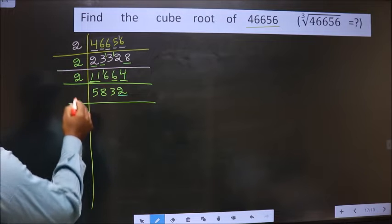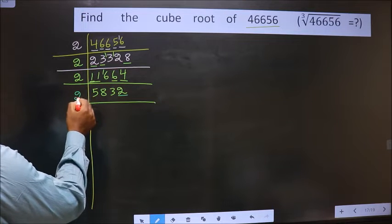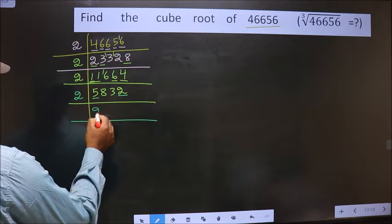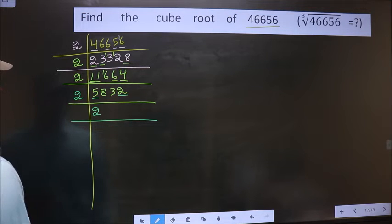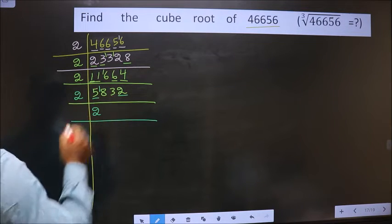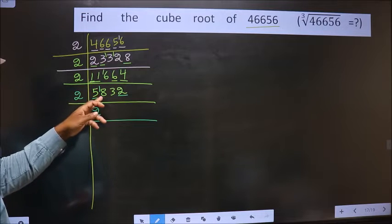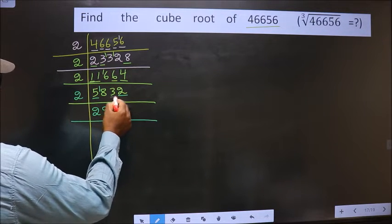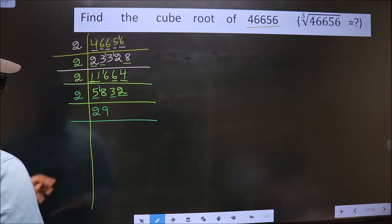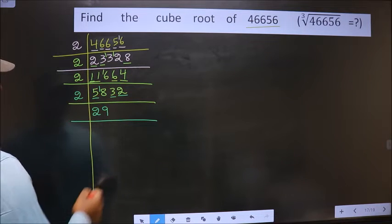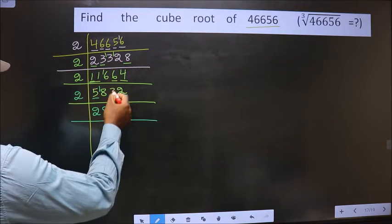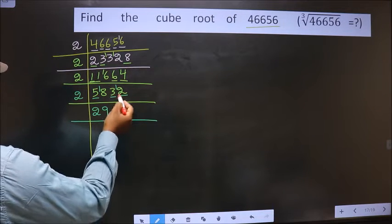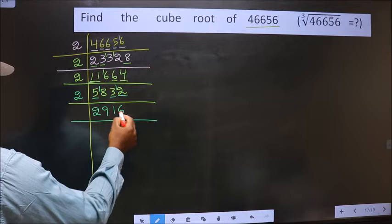Last digit is 2, which is even, so we take 2 again. First digit is 5: closest in the 2 table is 2×2=4; 5 minus 4 is 1, carried forward making it 18. 2×9 is 18. Next digit is 3: closest is 2×1=2; 3 minus 2 is 1, carried forward making it 12. 2×6 is 12.